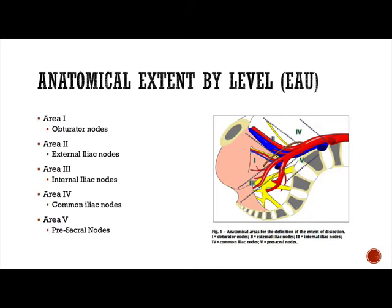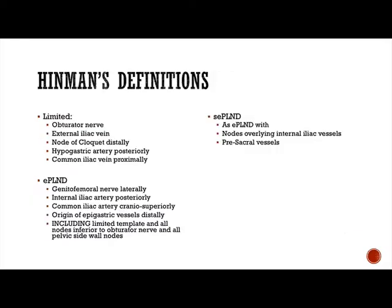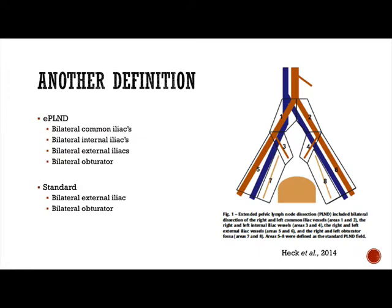The EAU defines different areas: area 1 — obturator nodes, area 2 — external iliac nodes, area 3 — internal iliac nodes, area 4 — common iliac nodes, area 5 — presacral nodes. Hinman's has slightly different templates: limited includes the obturator nerve, external iliac vein, Cloquet's node, hypogastric artery, and common iliac vein. Extended adds the genitofemoral nerve laterally, internal iliac artery posteriorly, common iliac craniosuperiorly, and the origin of the epigastric vessels distally. Super-extended adds nodes overlying the internal iliac and presacral vessels.